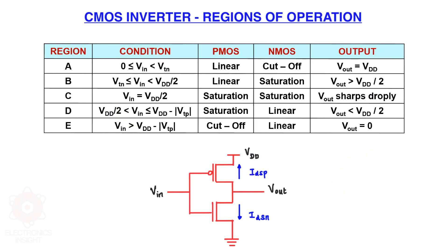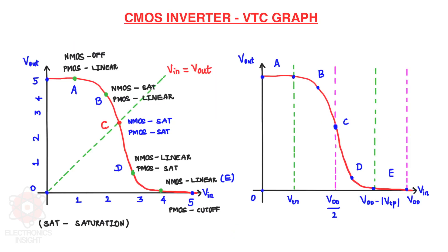This table is a summary of the CMOS inverter regions of operation. Those who have not watched the previous video on DC transfer characteristics, I would recommend you to have a look at that video for better understanding of the regions of operation. We have seen five different regions of operation and analyzed how PMOS and NMOS behave in each region — either in cutoff, linear, or saturation — and the corresponding output voltage values.